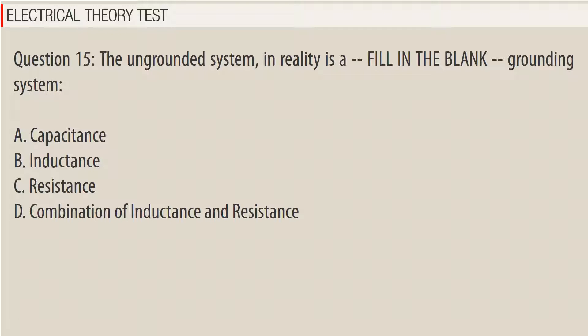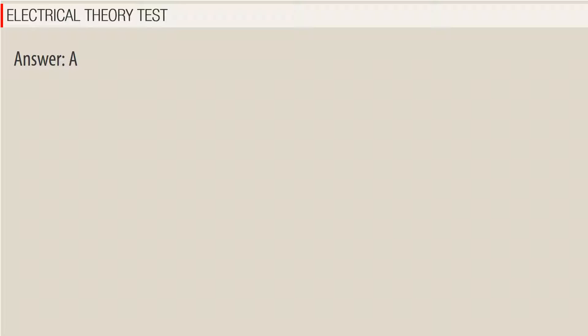Question 15: The ungrounded system, in reality, is a _____ grounding system. A. Capacitance, B. Inductance, C. Resistance, D. Combination of inductance and resistance. Answer: A.